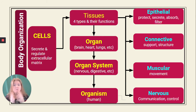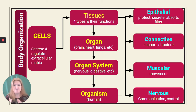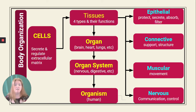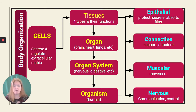Then tissues — groups of tissues that function together — make organs, like the brain, the heart, the liver, the small intestines, the thyroid gland. Groups of organs that function together would be an organ system, like your nervous system, digestive system, cardiovascular system, et cetera. And then groups of organ systems — the 11 that make up the human body — make up an organism, a human being in this course.